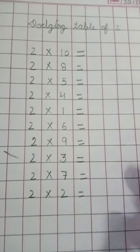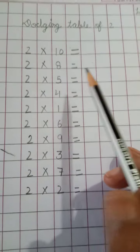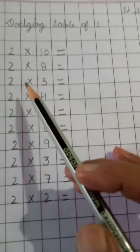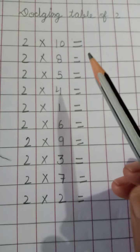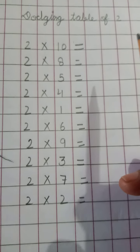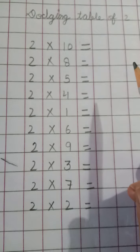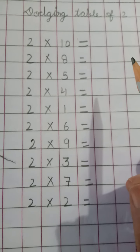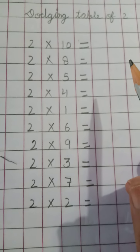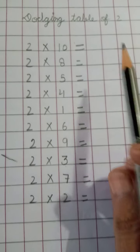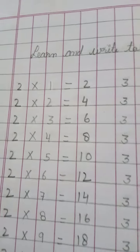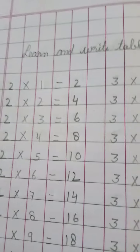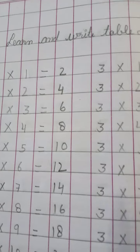Look at here. This is the dodging table. What is the difference between the simple table and the dodging table? I will tell you. Look at here — this is the simple table.